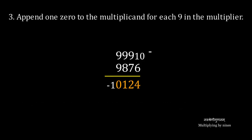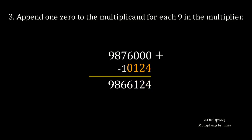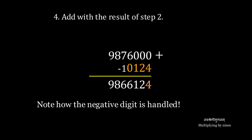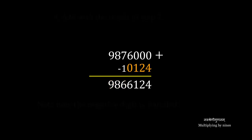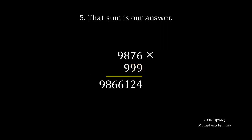Then we append three zeros to the multiplicand and add the complement prefixed with a negative one. We add digit by digit, and note that the negative one is treated as a standalone negative digit. And the sum is our answer. 9,876 times 999 is 9,866,124.